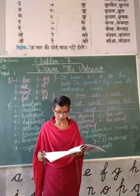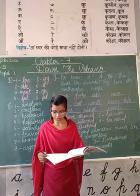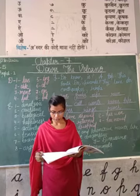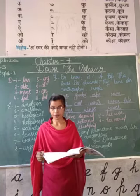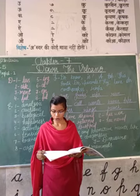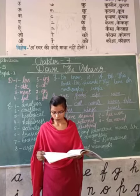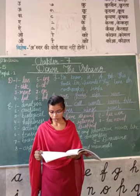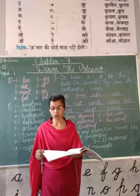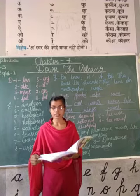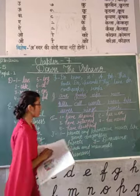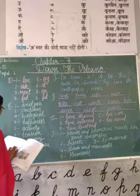A suffix is a letter or a group of letters that creates a new word when added at the end of a word. Like 'bottom' — when we add 'less' at the end of the word 'bottom,' it becomes a new word: 'bottomless.' When we add 'ment' at the end of the word 'move,' it becomes a new word: 'movement.' So 'ment' and 'less' are suffixes. Let's start doing this exercise.